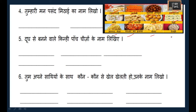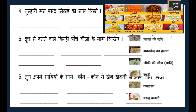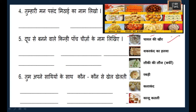The next question asks to write five items made from milk (doodh se banne wali paanch cheezon ke naam likho). Examples include: chawal ki kheer, shakarkand ki halwa, lauki ki khoya, rabdi, khoya, kand, kaju katli — all these are made from milk.